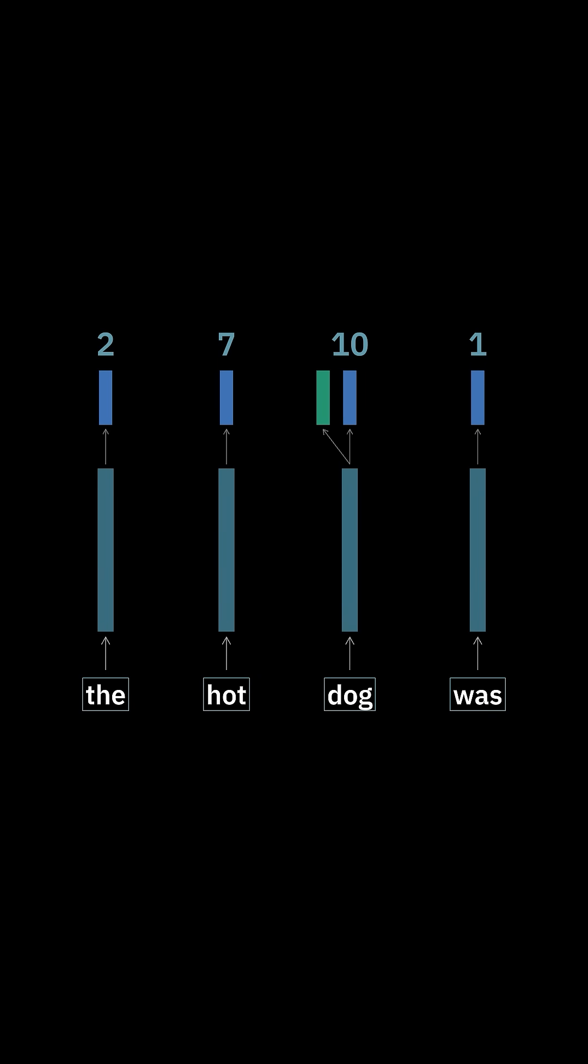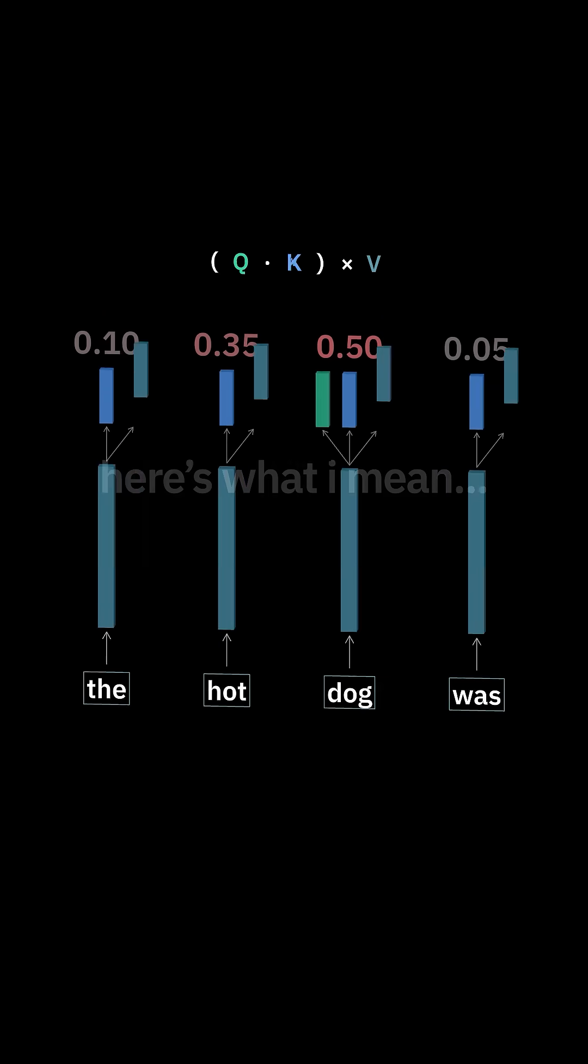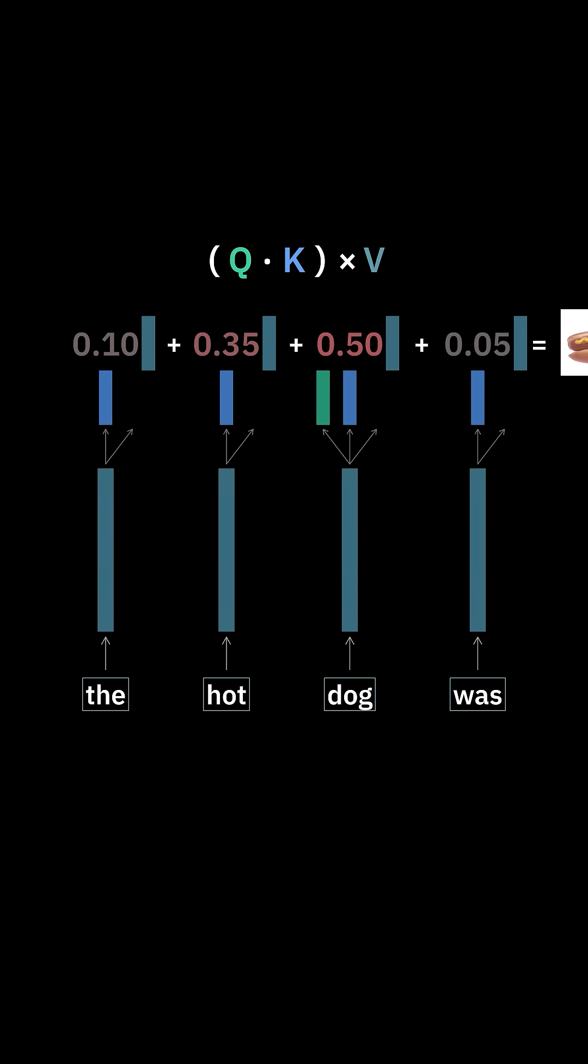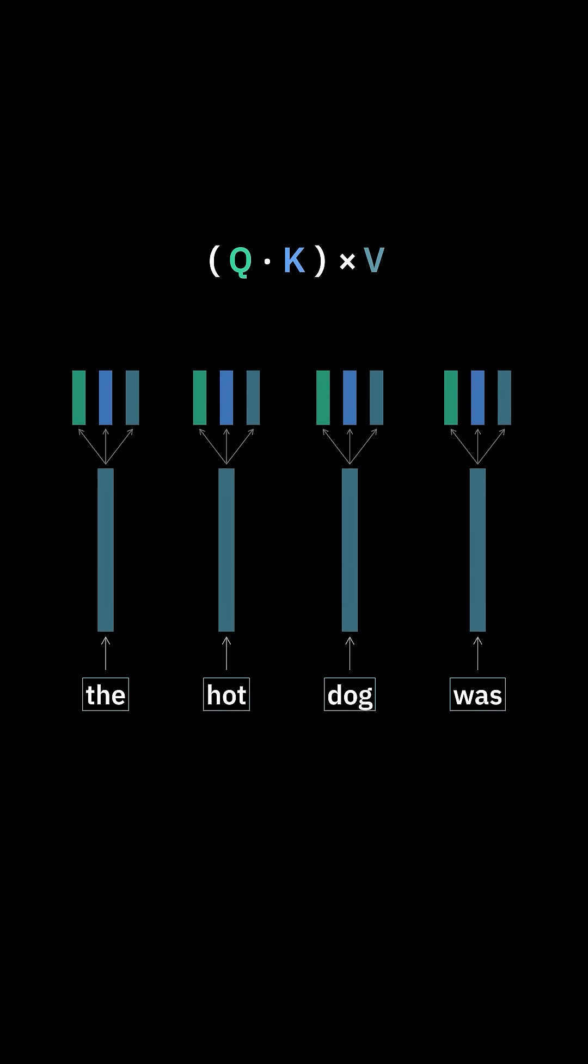Do the same for every token and squish them with softmax so they all add up to one. This is now our attention scores. Let's project one more vector called V that says, 'here's what I mean.' We multiply these by your attention scores, add them all up, and get the final meaning. We do this for every token so that every token attends to every other token. That's attention.